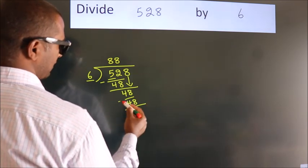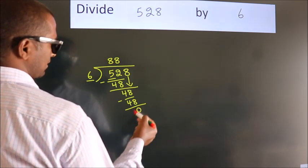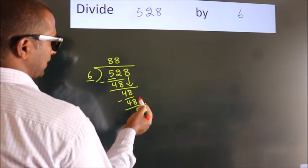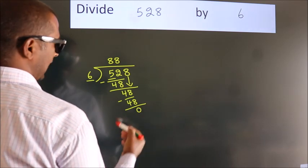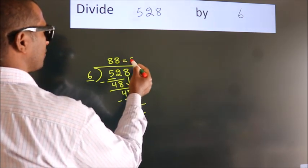Now we subtract. We get 0. After this, no more numbers to bring down and we got remainder 0. So, this is our quotient.